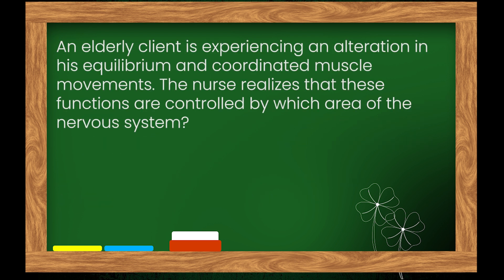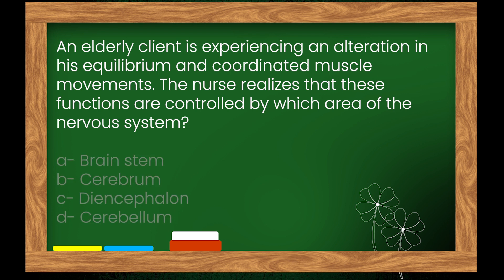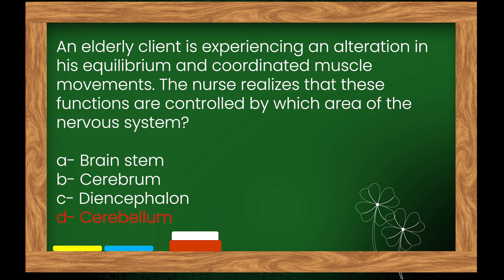Question 13: An elderly client is experiencing an alteration in his equilibrium and coordinated muscle movements. The nurse realizes these functions are controlled by which area of the nervous system? Options: A. Brain stem, B. Cerebrum, C. Diencephalon, D. Cerebellum. The right answer is option D: Cerebellum.